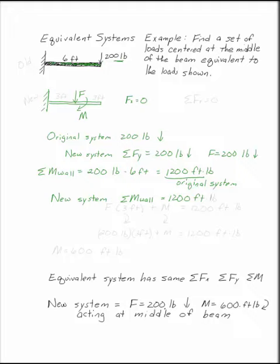Now what I have in my new system is F acting at a distance of 3 feet. This is in the middle, so this is 3 feet and this is 3 feet. F spins the wall clockwise. I also have this moment that I put on here that spins the wall clockwise. These two things together have to add up to 1,200 foot-pounds.